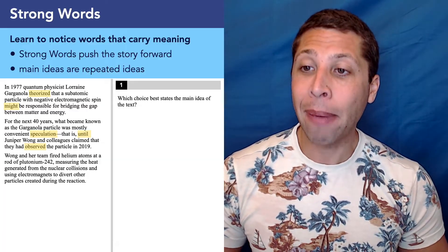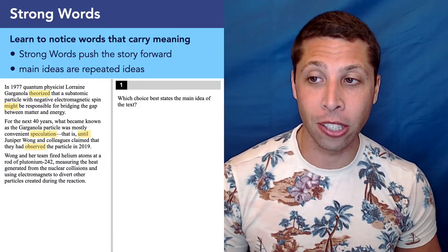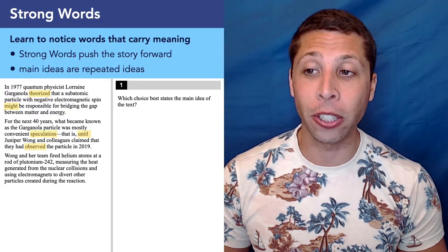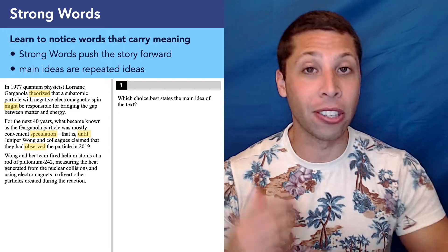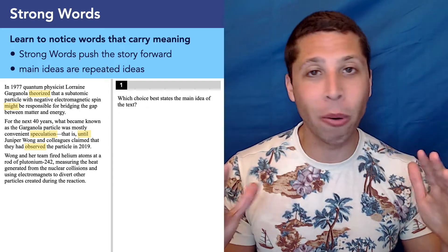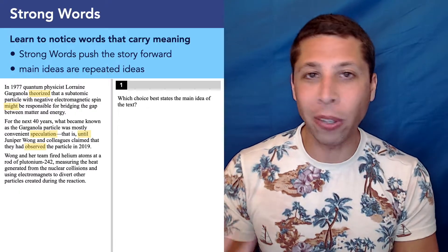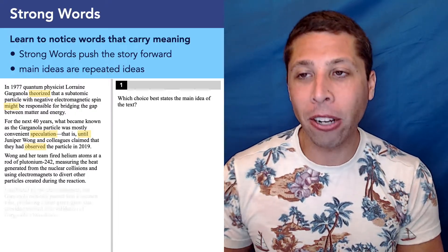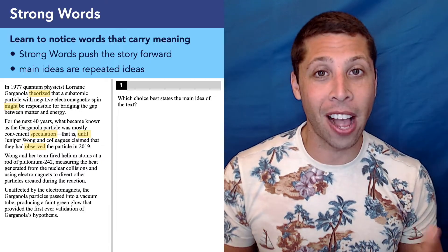Sentence three, Wang and her team fired helium atoms at a rod of plutonium-242, measuring the heat generated from the nuclear collisions and using electromagnets to divert other particles created during the reaction. This is all house cat stuff. This is just describing the experiment. I know it's not going to matter. It's just that they did the experiment that matters. I don't really care about the specifics.